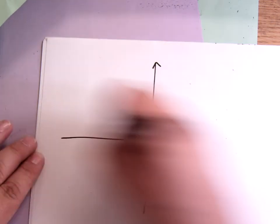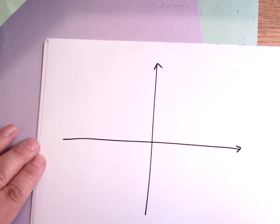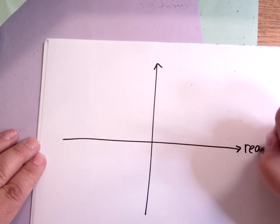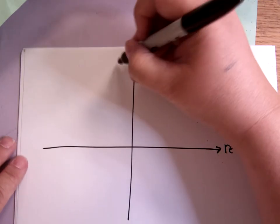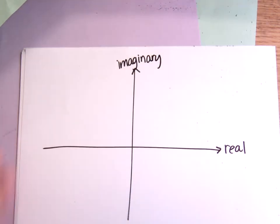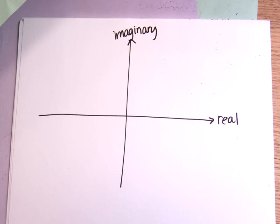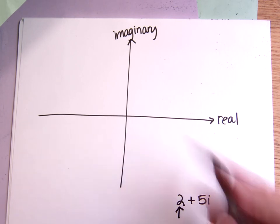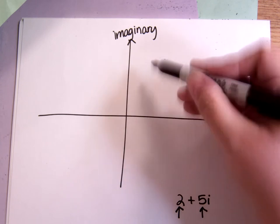Okay, so the complex plane basically means I have two axes, and this is the real axis, and this is the imaginary axis. So when I look at a complex number, I look at it in two parts. For instance, the number 2 plus 5i. I graph the real part left to right, and I graph the imaginary part up and down.